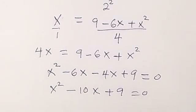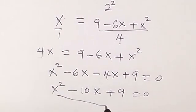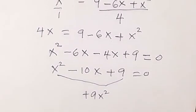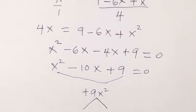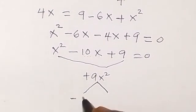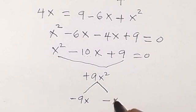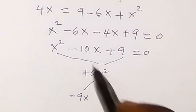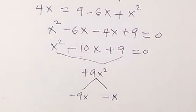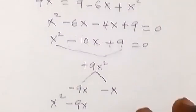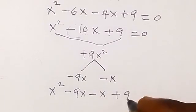Now we can solve this quadratic equation with any method of our choice — let's factor. Using the factoring method, the first term and the last term multiply to give plus 9x squared. We need to break down minus 10x into two factors that add up to minus 10x: that's minus 9x then minus x, since multiplying gives plus 9x squared and adding gives minus 10x.